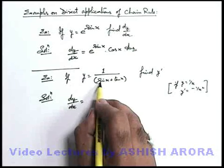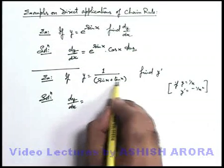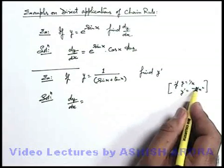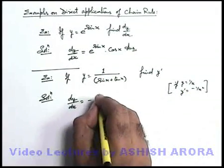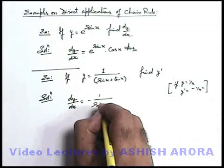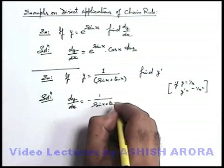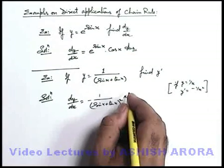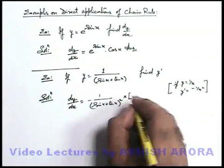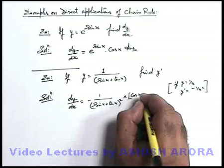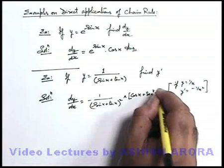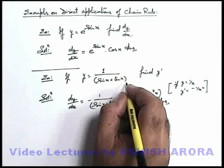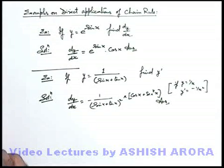Here, if I suppose sine x plus tan x as t, it becomes one by t. So the differentiation of one by t is minus one by t squared, which gives minus one by (sine x plus tan x) squared. Now I multiply it with the differentiation of t, which is cos x plus sec squared x. This is the answer to the differentiation of one upon sine x plus tan x.